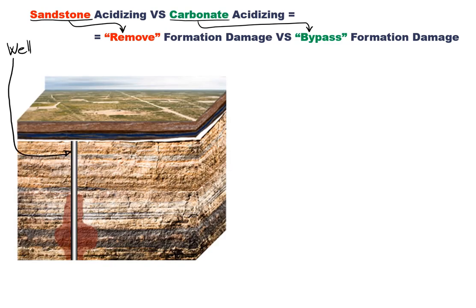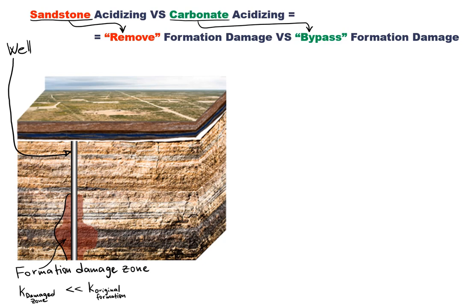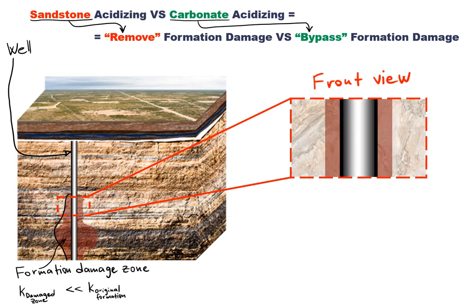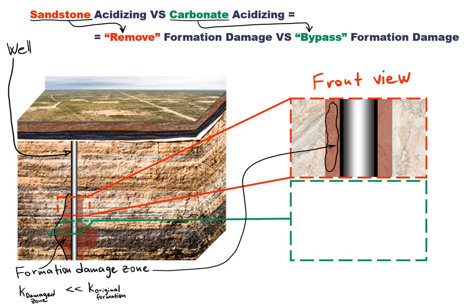Here we can see a vertical well that has some formation damage in the near wellbore area. Let's assume that it is caused by invasion of the drilling mud filtrate into the reservoir. Normally, this invaded or damaged zone would have much lower permeability in comparison to the undamaged zone. Let's zoom in on the damaged zone. This figure represents the front view of the well with this cylinder of formation damage around the wellbore. There is also a cross-sectional view here at the bottom.